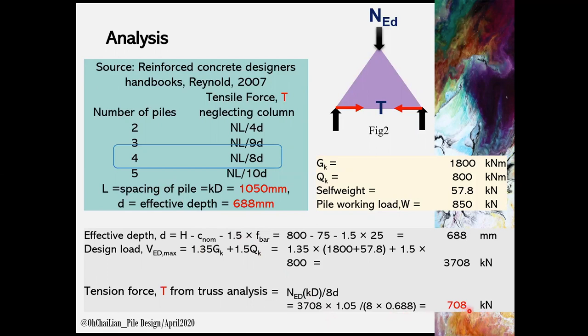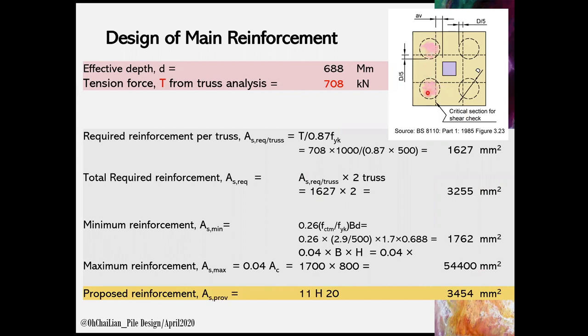Remember, in this case, we have two trusses for four numbers of piles running in both x and y directions. We can design the main reinforcement and the transverse bars. Here I show the calculation for the transverse bars only, with lesser effective depth. The required reinforcement per truss is obtained based on T over 0.87 FYK. Since there are a total of two trusses in this case, to get the total required reinforcement, we can multiply the AS required per truss with two trusses. We shall always make sure the AS provided is within AS minimum and AS maximum recommended by Eurocode 2 sections 9.2.1.1. In this case, we provide AS 11H20, which is 3454 mm squared.